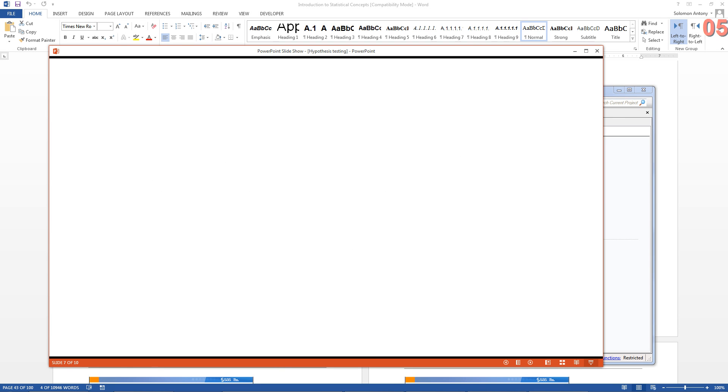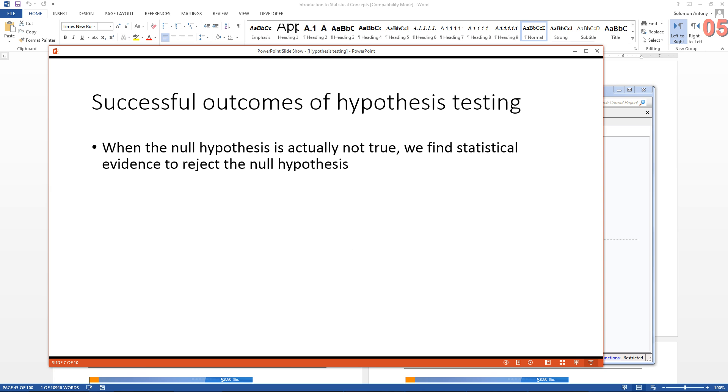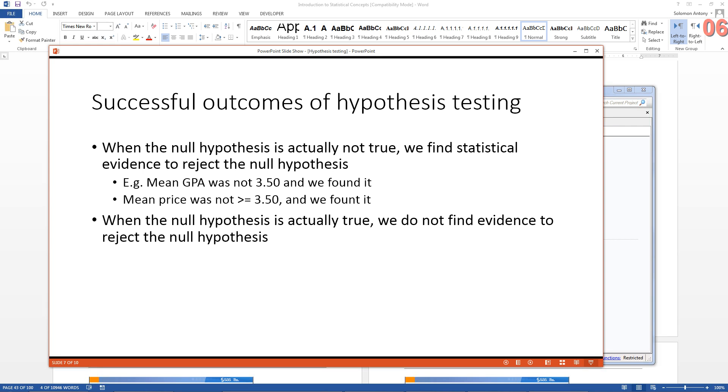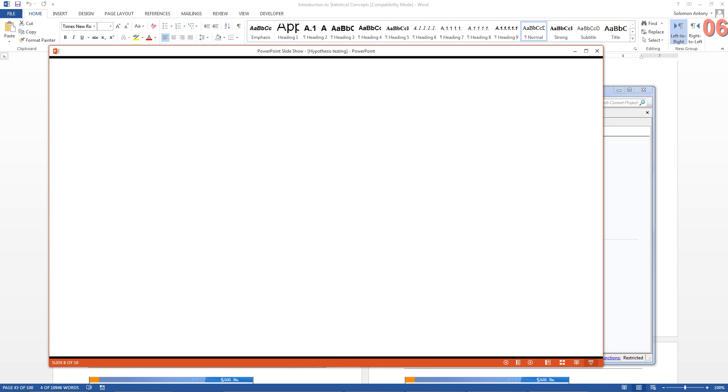That is what we do all the time. And when we do a successful outcome of the hypothesis testing, there are two scenarios. That is when the null hypothesis is actually not true, then if we find statistical evidence, then that is a good successful outcome. For example, mean GPA was not 3.5 and we found it not to be 3.5. And the second alternative is that null hypothesis is actually true, but we did not find evidence to reject null hypothesis. So that's also a good outcome. For example, the price was actually 3.5 or higher and we did not find evidence to refute it. So these are successful outcomes.